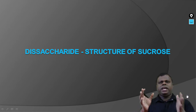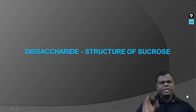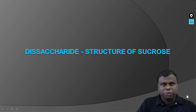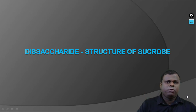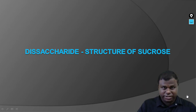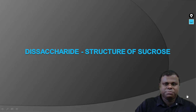So basically in the case of disaccharides, what are we going to do? We are going to take the monosaccharides and then eliminate a water molecule, because we already know that carbohydrates are polyhydroxy aldehydes or polyhydroxy ketones. You can have one OH and one OH and then remove the water molecule and join them together — that's the very important part.